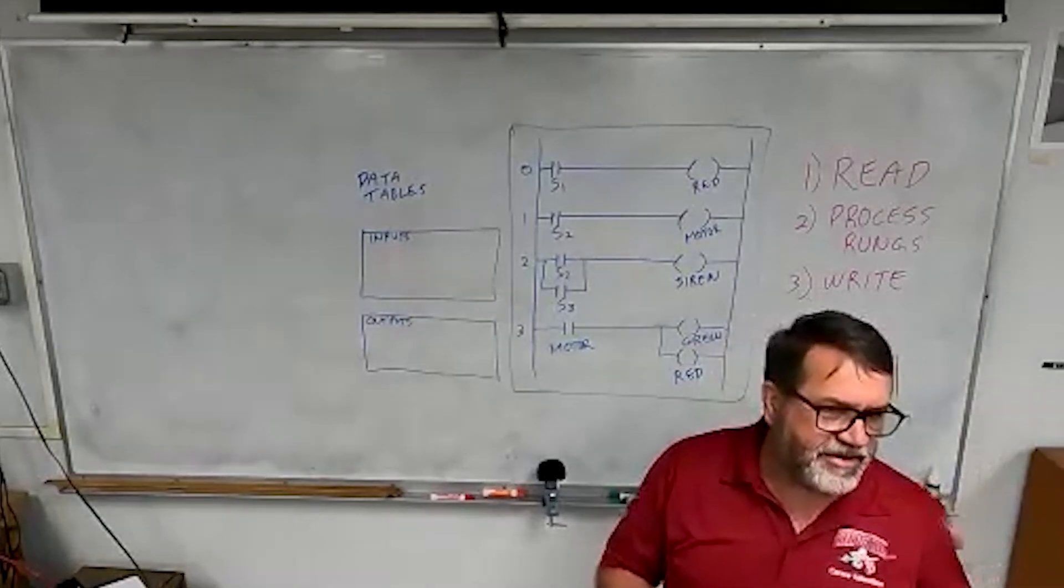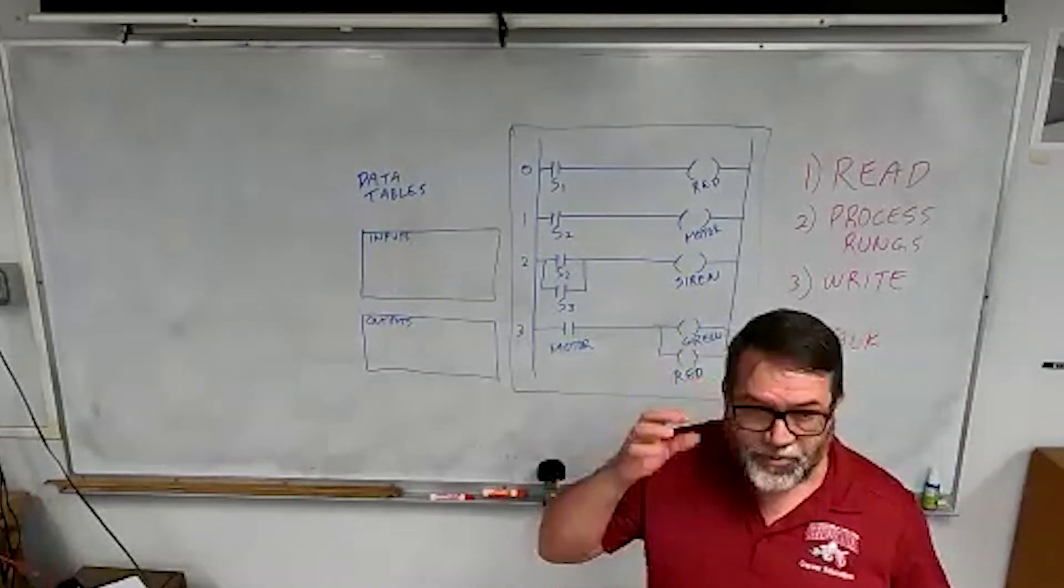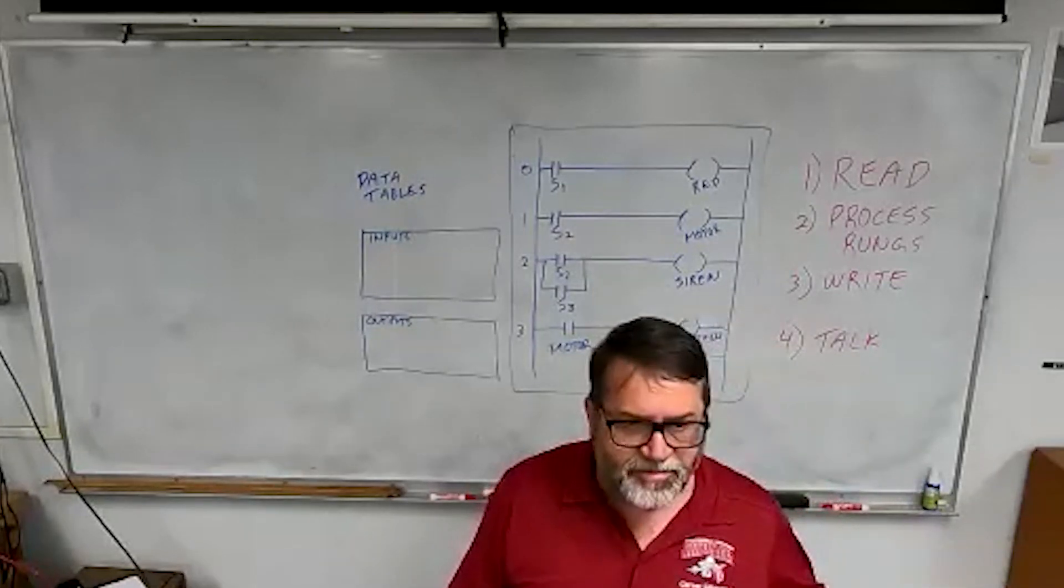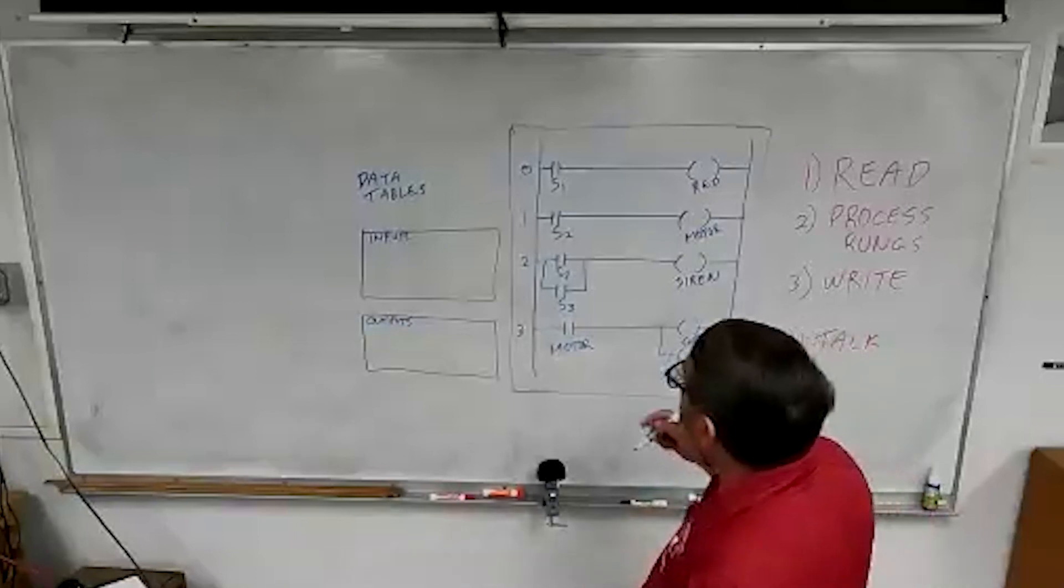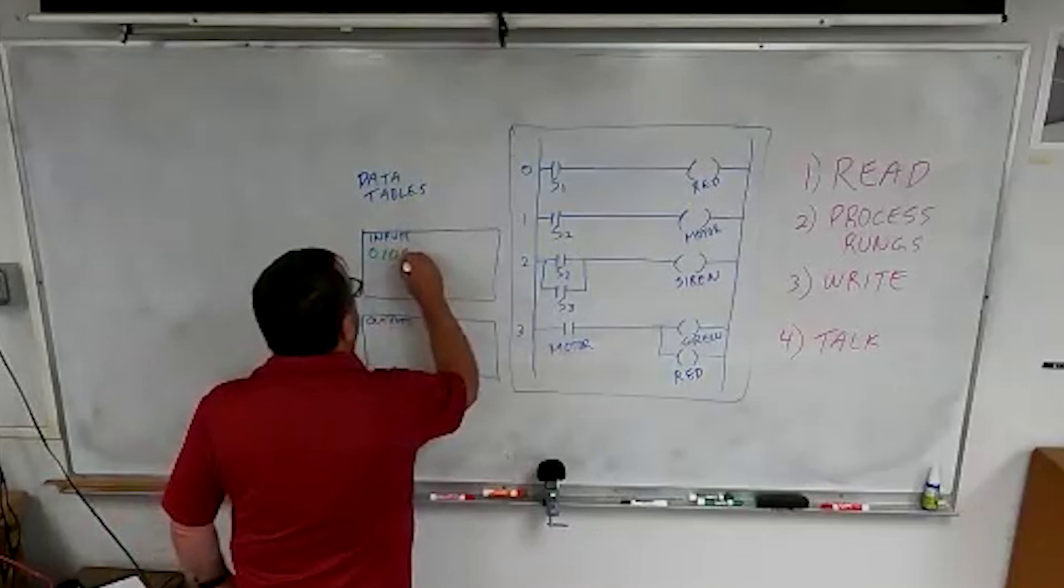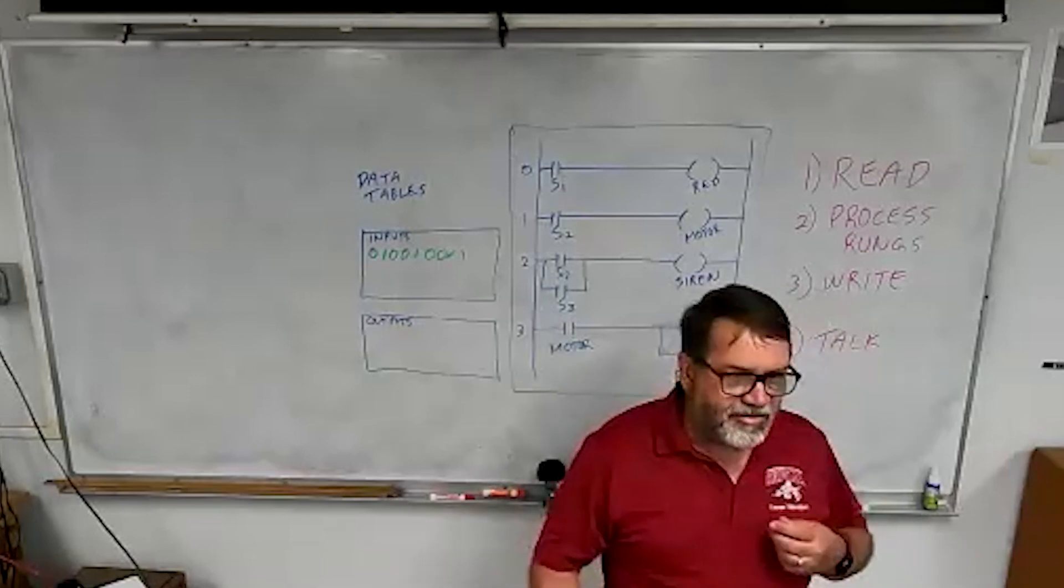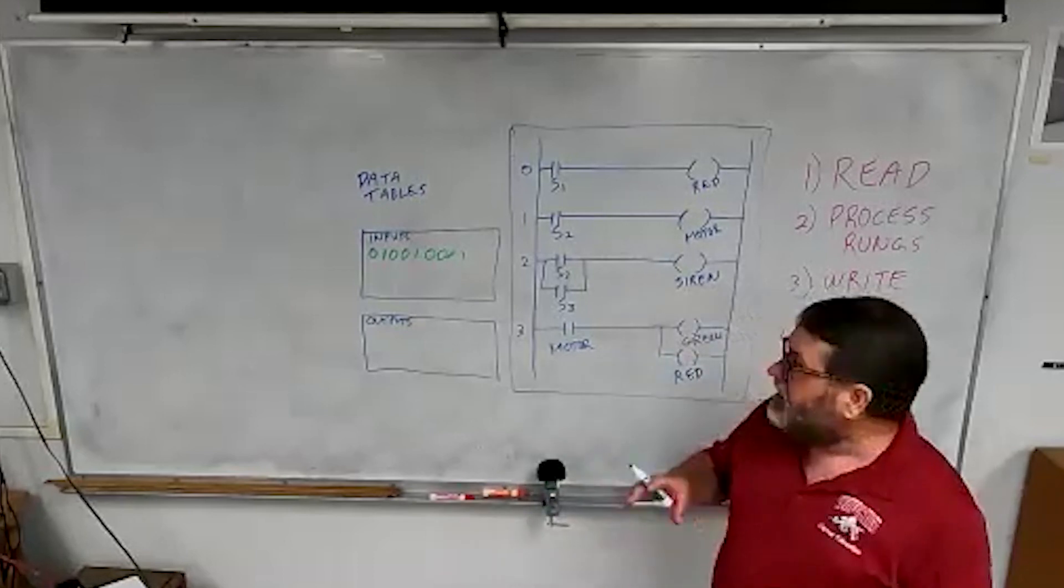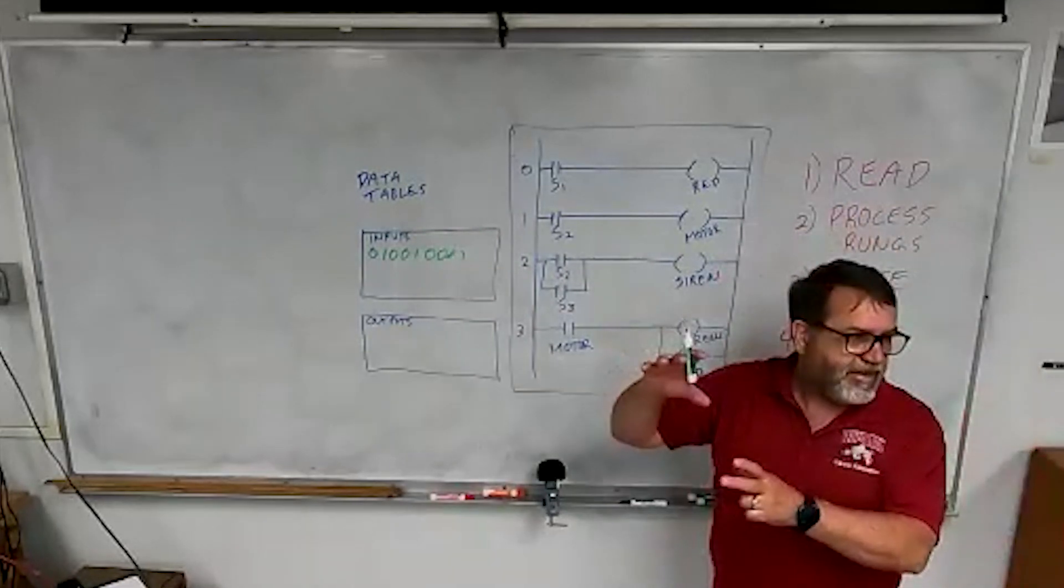The first step is when they read. So they go out, and they look at all the inputs, and they read what inputs are hot. So on your trainer panel, you've got buttons that you can push, and that will send a hot signal into the PLC. So when they read, they're going to look at all the inputs, and they're going to update the tables, and they're going to just make a recording of what's hot and what's cold. And that's all they do in that step. Now they don't go back and read again until they come back around to step one. They read it one time, and that's it.